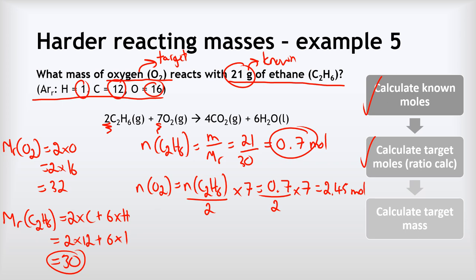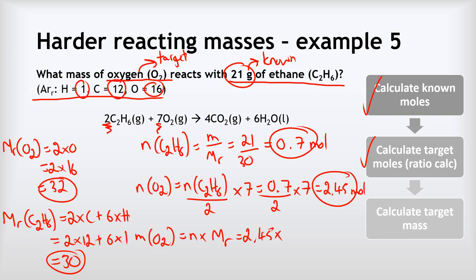The last step is to find the mass of oxygen. Mass of O2 equals n times Mr: 2.45 multiplied by 32 gives a final answer of 78.4 grams. Well done if you followed all of these. My suggestion is to go back to the first example and try it yourself without listening to me, then work through the other examples until you feel comfortable.